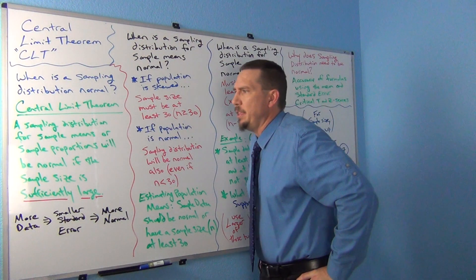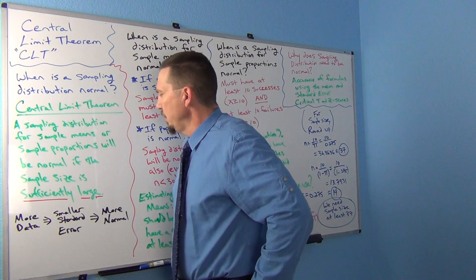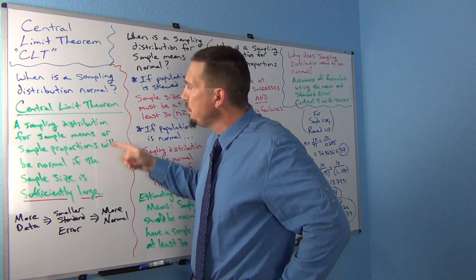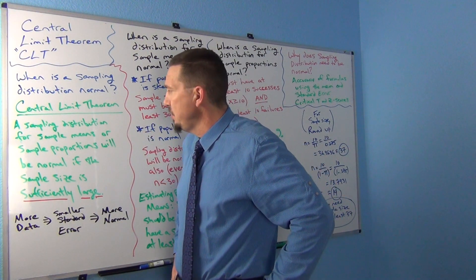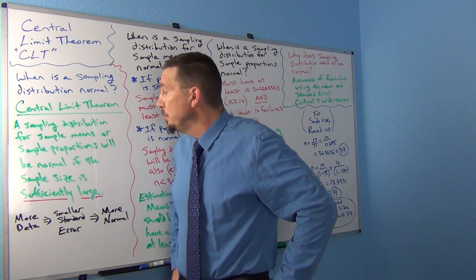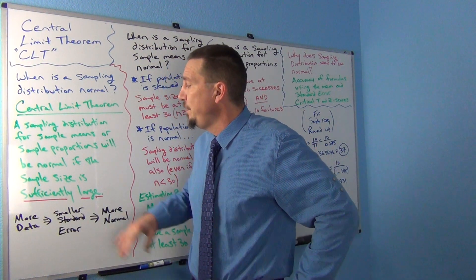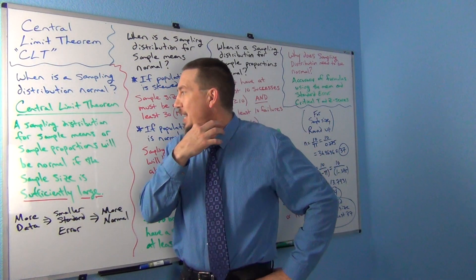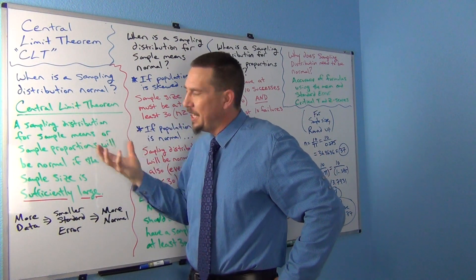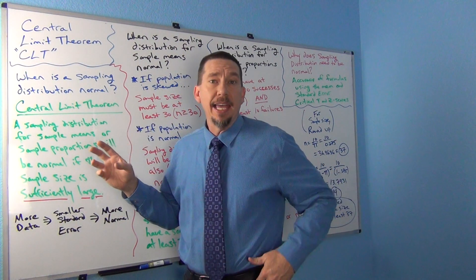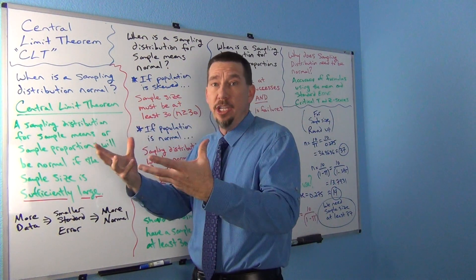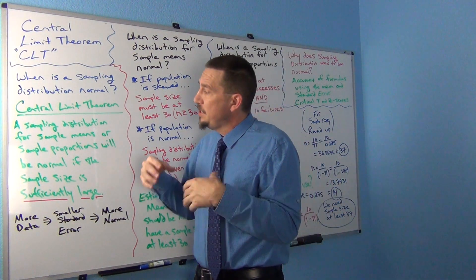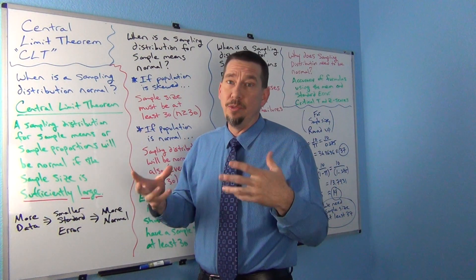So what does the Central Limit Theorem tell us? The Central Limit Theorem says that a sampling distribution for sample means or sample proportions will be normal if the sample size is sufficiently large. That statement is kind of loaded — a lot of people read that and don't quite get the idea of it. The main thing is that if your sample size is large enough, if you collected enough data in your sample, then the sampling distribution is likely to look normal.